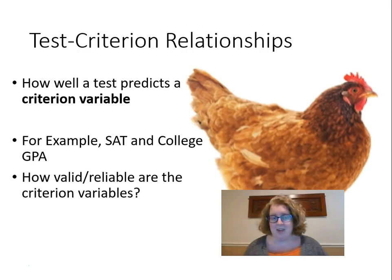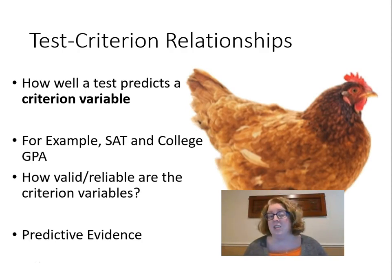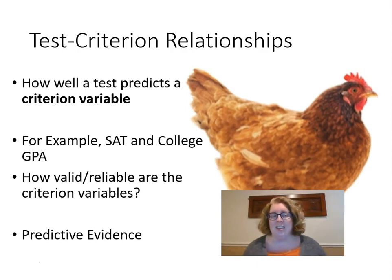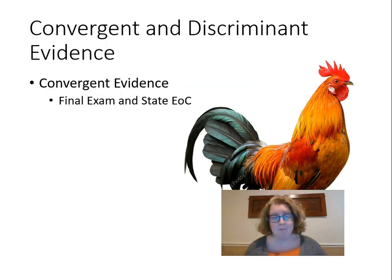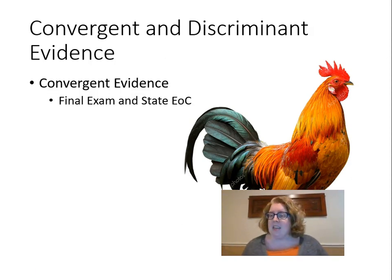We could also have concurrent evidence — two things measured at the same time. If we want evidence that the CogAT is a good measure of intelligence, we might give the CogAT at the same time as the WISC, which we already know is a great measure of intelligence. That would give us concurrent test-criterion relationships. We can also have convergent and discriminant evidence, which we touched on at the beginning of the semester.